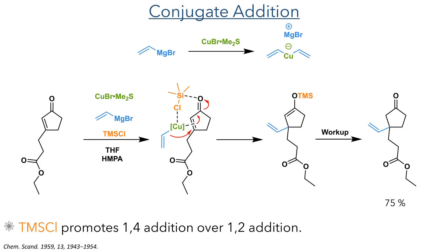Taking these studies together, we could propose the following mechanism. The Grignard reagent undergoes transmetallation with the copper bromide DMS complex, forming the organocopper reagent. This forms a pi-complex with the enone, with the TMS chloride acting as a Lewis base and coordinating to the copper. The reagent then adds the vinyl group in a conjugate fashion, with the TMS chloride silylating the enolate either during the transition state or after the addition has occurred. The TMS enol ether is very labile and can be hydrolyzed upon workup, forming a ketone to generate the target compound in a 75% yield.